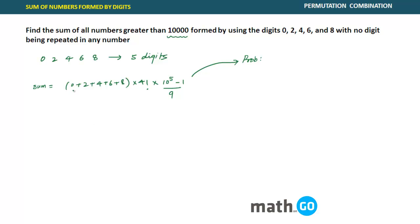Problem is, we have taken 0 also. For 0, there would be some numbers where 0 will come in the beginning. And if 0 comes in the beginning, then this implies it will be a 4 digit number. So this sum actually has these numbers also which are 4 digit because 0 you have included. This answer contains numbers which are less than 10,000 also. They are also being added into this sum. So you want to remove them.